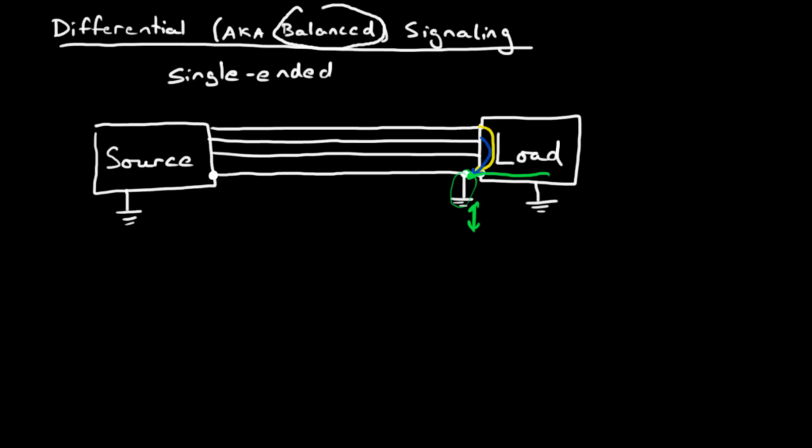Well, what's the advantage of single-ended signaling? And the advantage is you don't need many wires. For, here we have one, two, three signal wires, and we need only one ground wire. So, for any N wires, you only need N, for any N signals, you only need N plus one wires to accommodate your scenario.